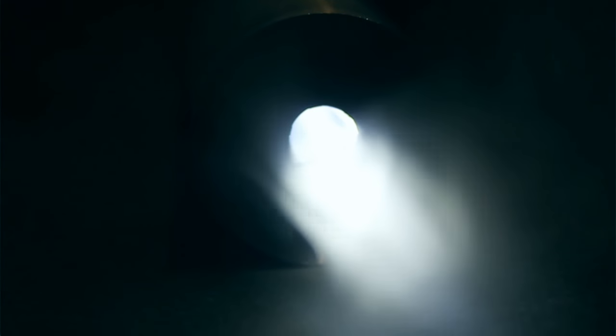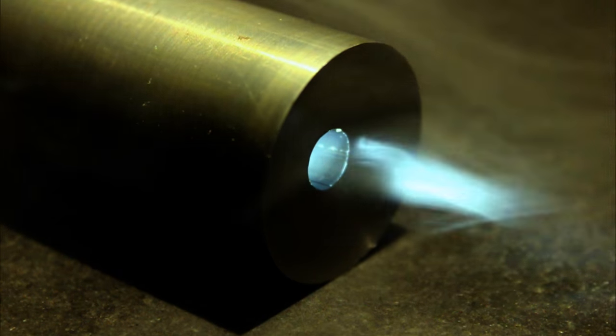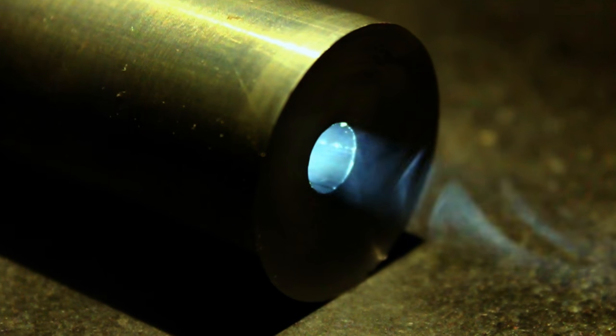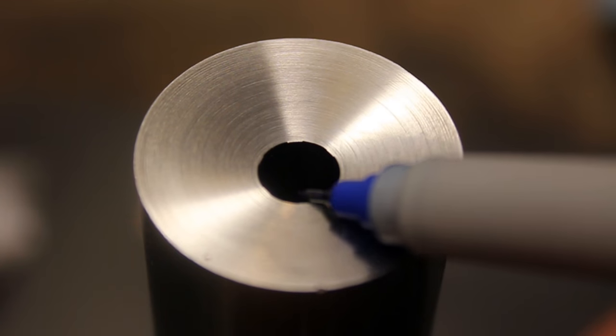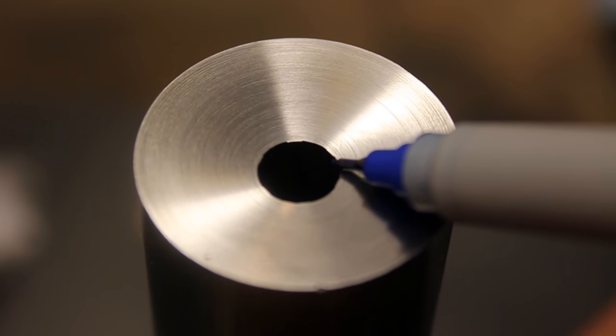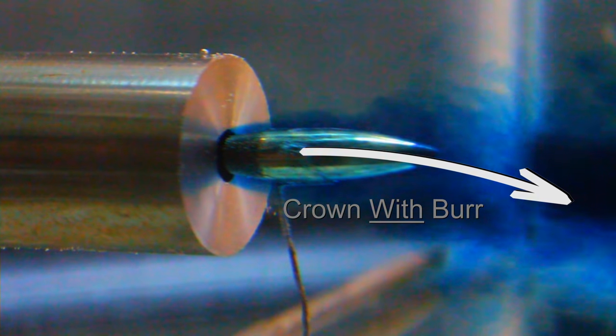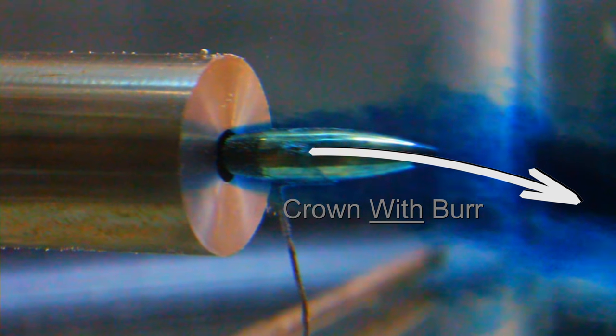Now I subscribe to the thinking that barrel crowns can greatly affect a rifle's accuracy. But what is most important is the precise area where the bore meets the crown, and gases can either come out concentric, or push the bullet a bit more or less in one direction.